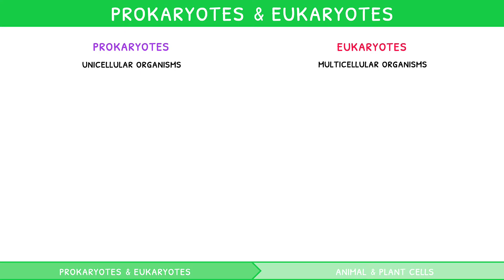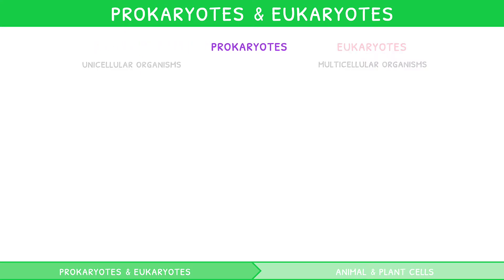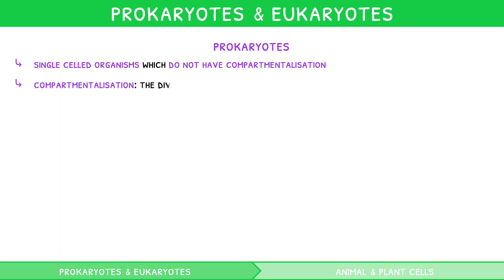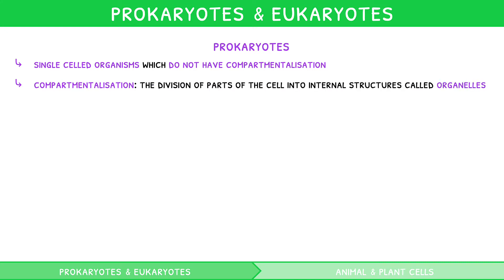Let's start by looking at prokaryotes. These are single-celled organisms which do not have compartmentalisation, which is the division of parts of the cell into internal structures called organelles. Examples of prokaryotes would include bacteria or archaea.